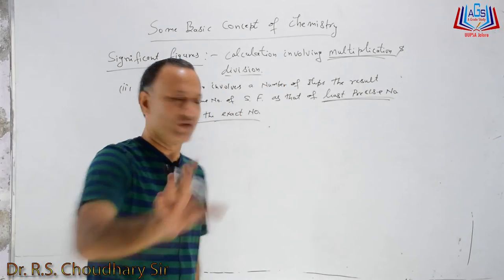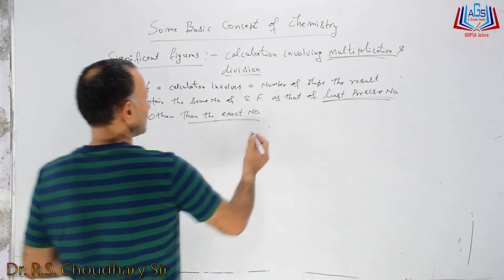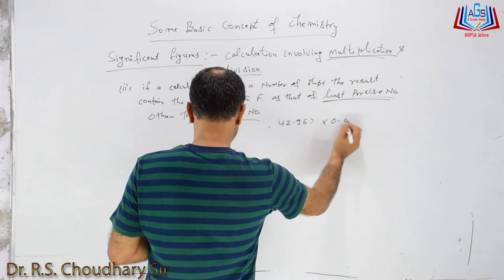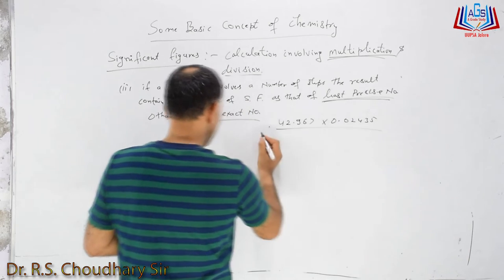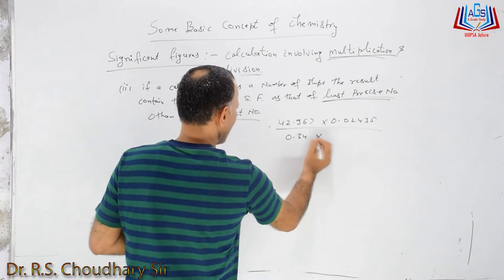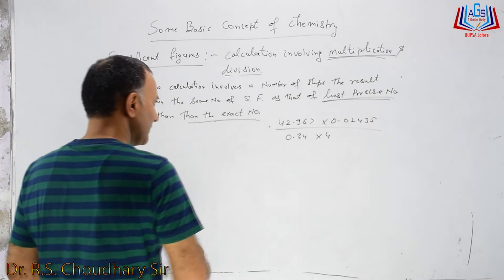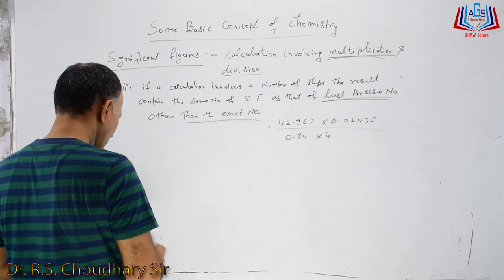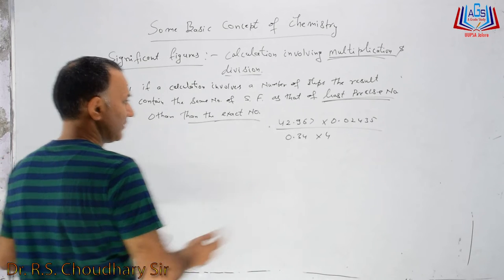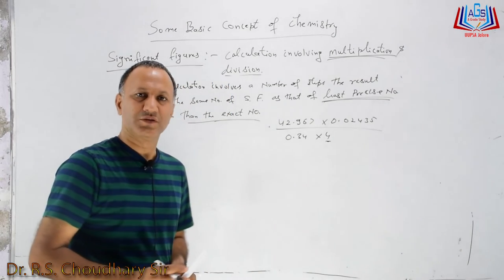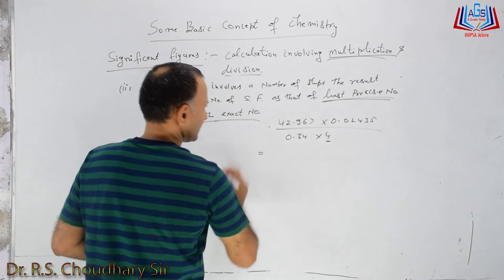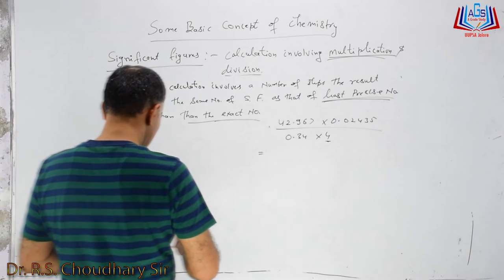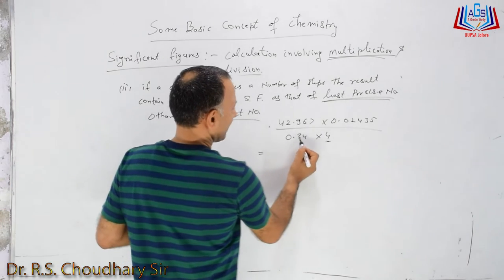I am taking an example so that it is clear. The calculation given is: 42.967 multiplied by 0.02435, divided by 0.34, multiplied by 4. Here, 4 is the exact number, so leave it. When we leave it, which remaining term has the least significant figures? 0.34 has 2 significant figures.